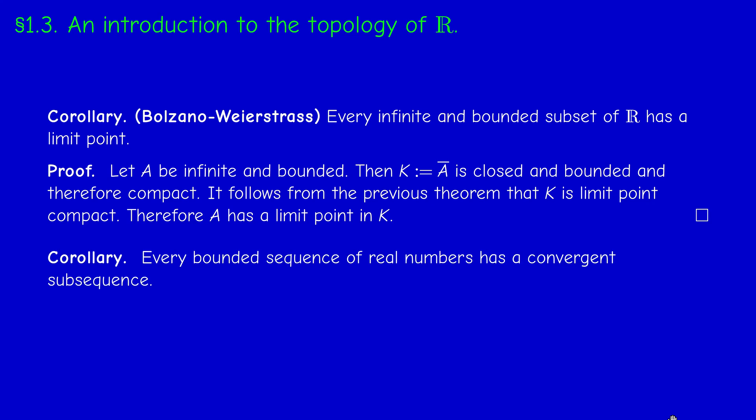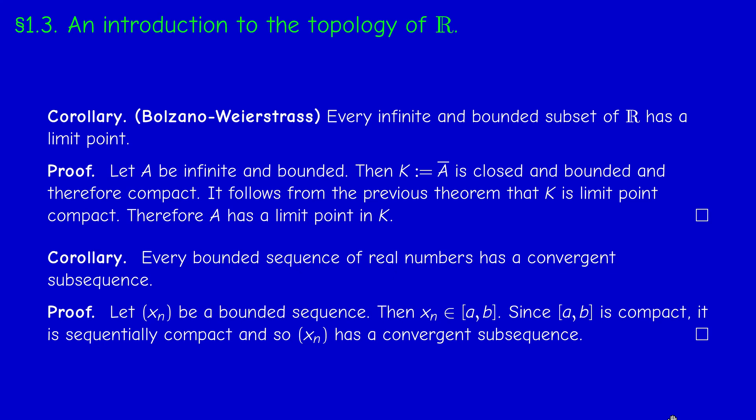Corollary: Every bounded sequence of real numbers has a convergent subsequence. Proof: Let (xₙ) be a bounded sequence. Then xₙ ∈ [a,b]. Since [a,b] is compact, it is sequentially compact and so (xₙ) has a convergent subsequence. But none of these two results is straightforward to prove.